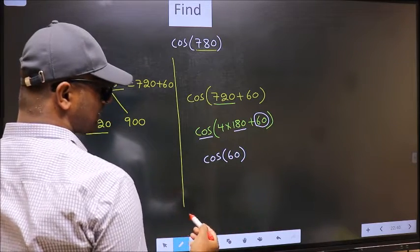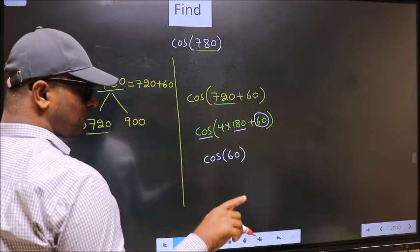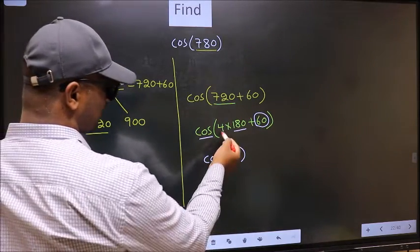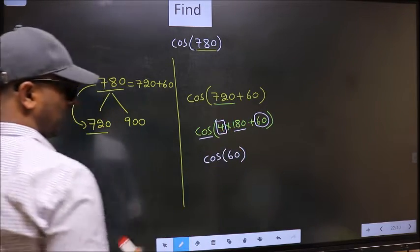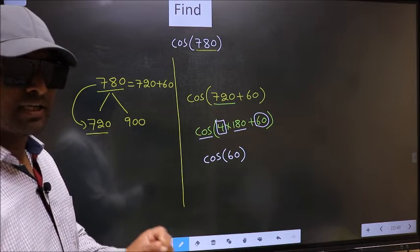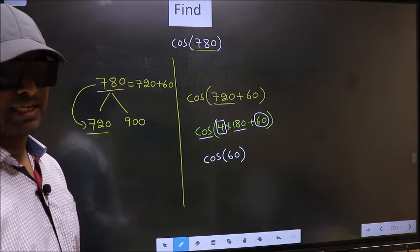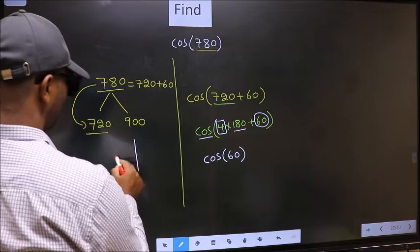Now the question is: will we get here plus or minus? To answer that, we should look at the number before 180, that is 4. And 4 is even, and all the even multiples of 180 lie in either...